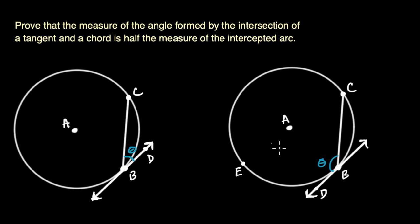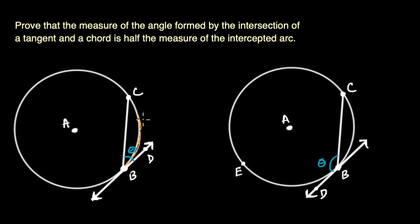We have two situations where we have an angle formed by a tangent and a chord. There's one situation where it is acute — that's the scenario on the left. There's another situation where the angle formed between the chord and the tangent is obtuse. In either of these cases, we want to compare them to the measure of the intercepted arc. In the situation on the left, the intercepted arc is what I'm showing here in yellow.